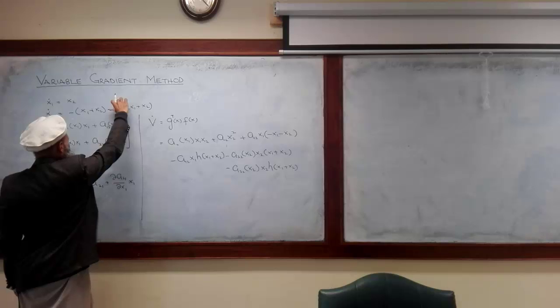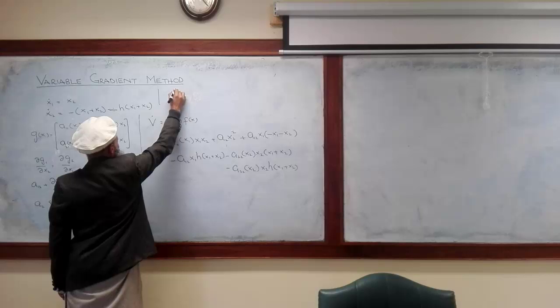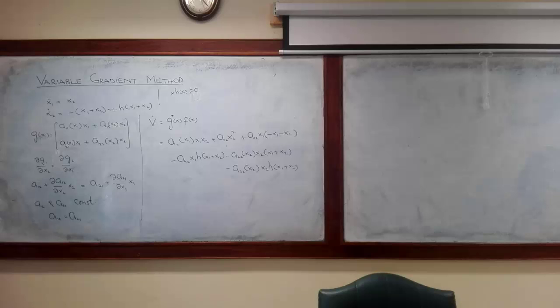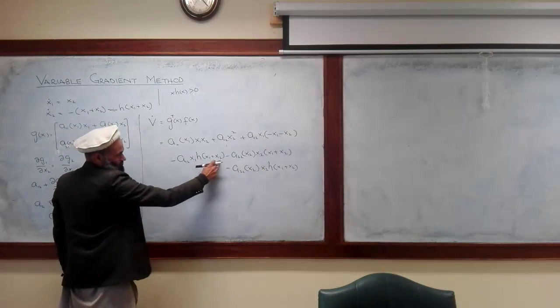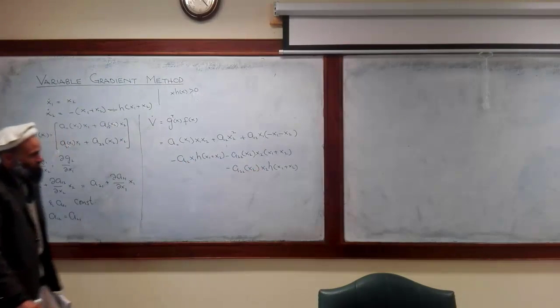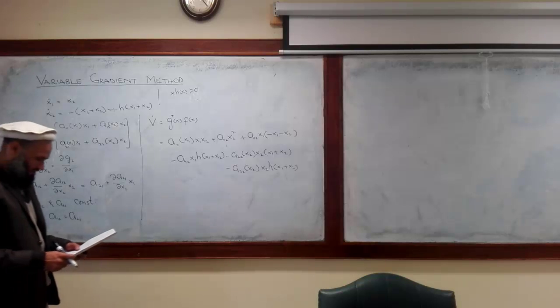Here, this h of x has one property: x into h of x is always greater than 0. This is some constraint on this nonlinearity which is provided to us. If we can somehow collect this term and this term, this x1 and x2, then we shall be able to talk about definiteness of this term. We shall remove the terms for which we cannot determine the definiteness.